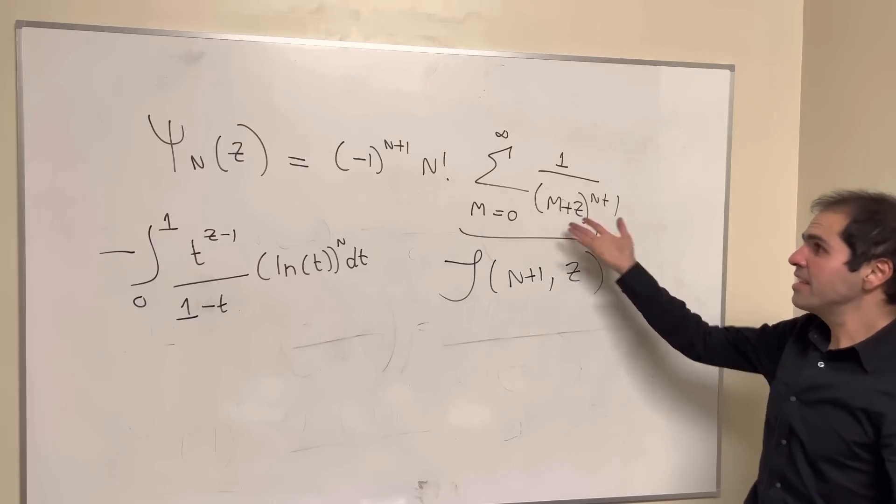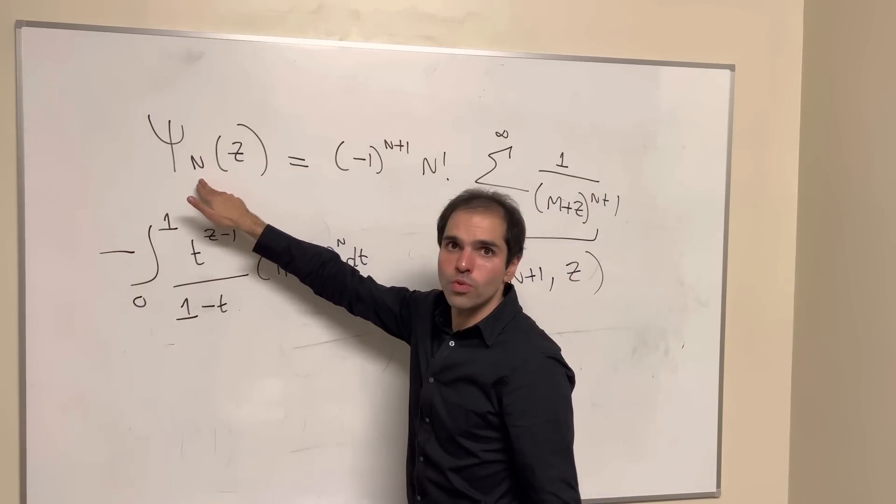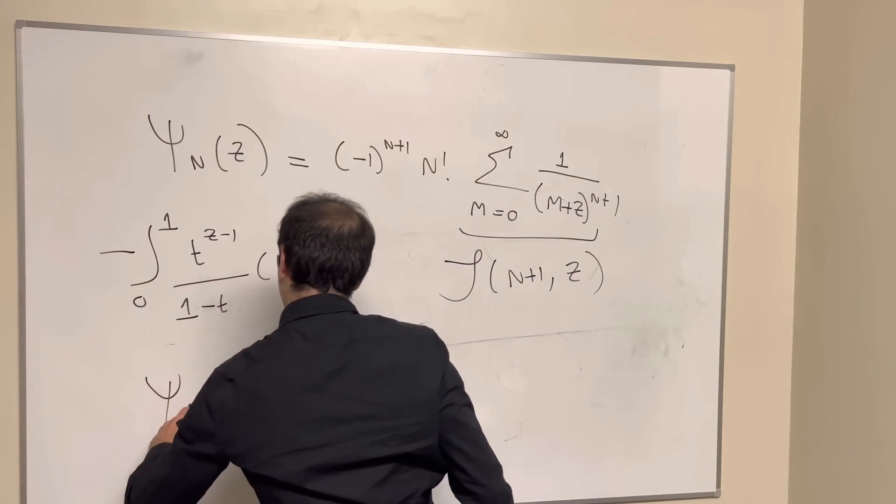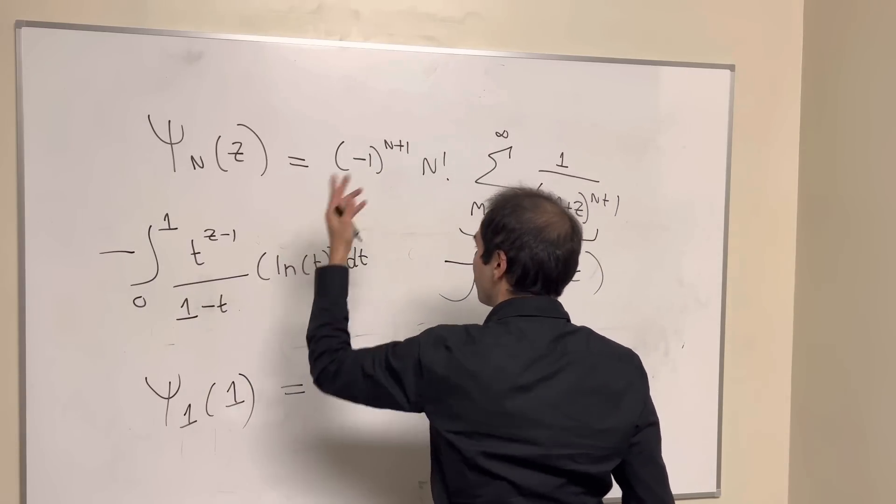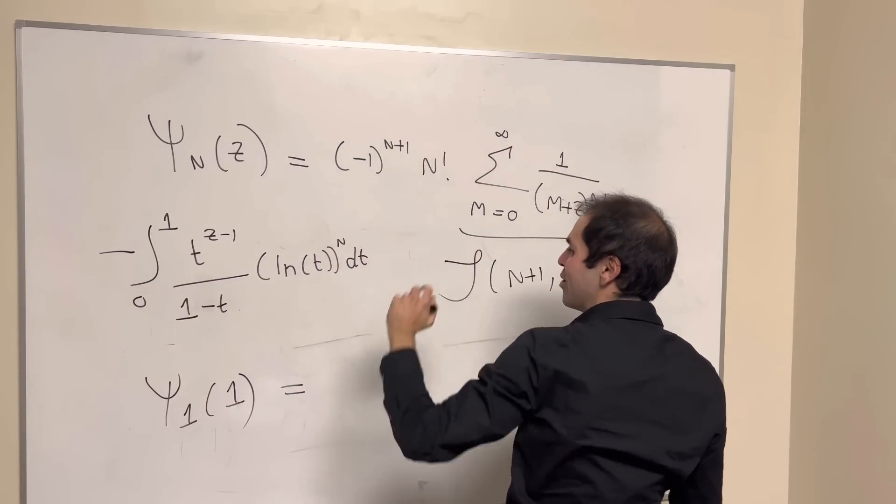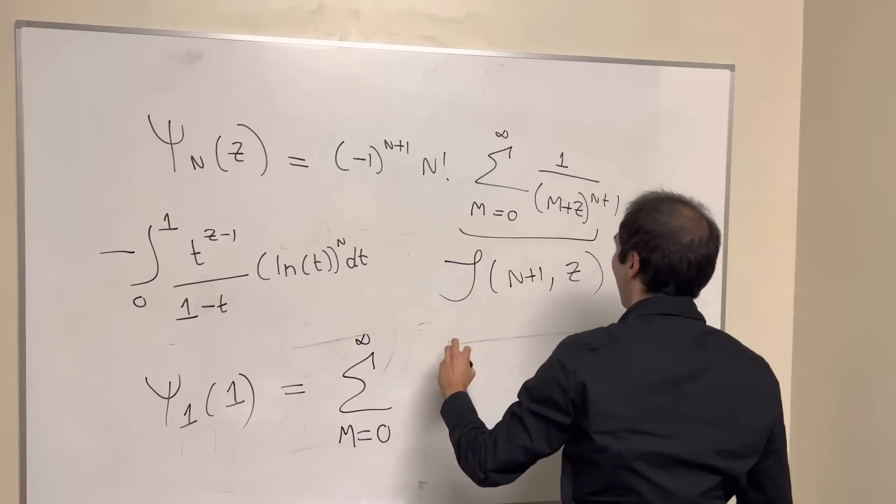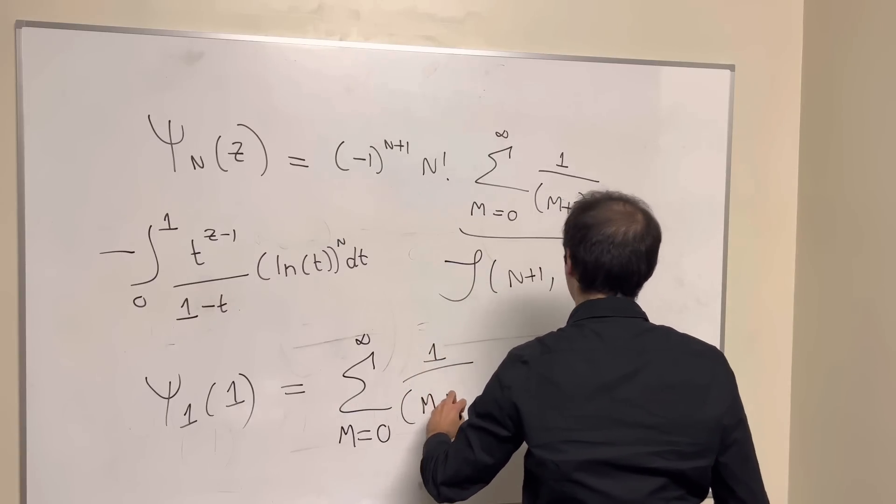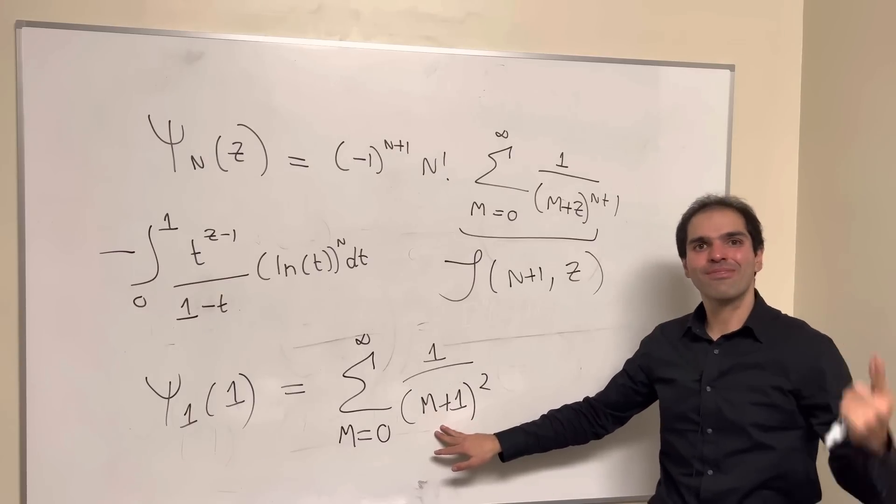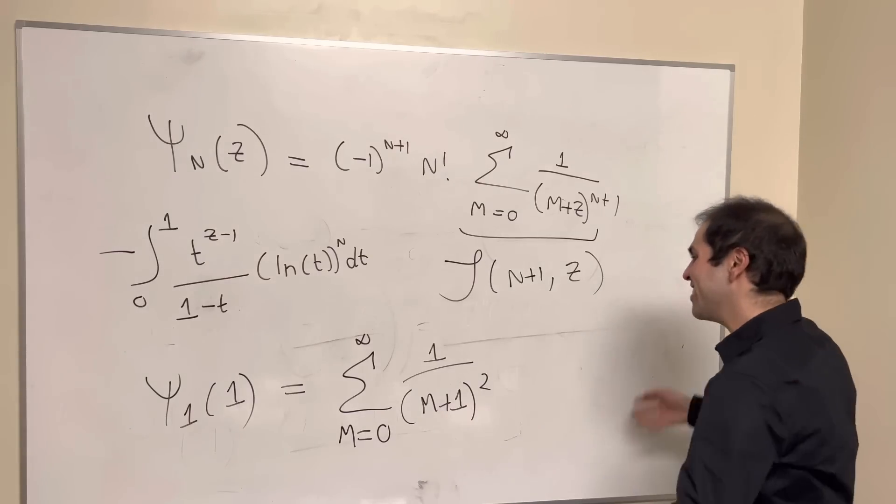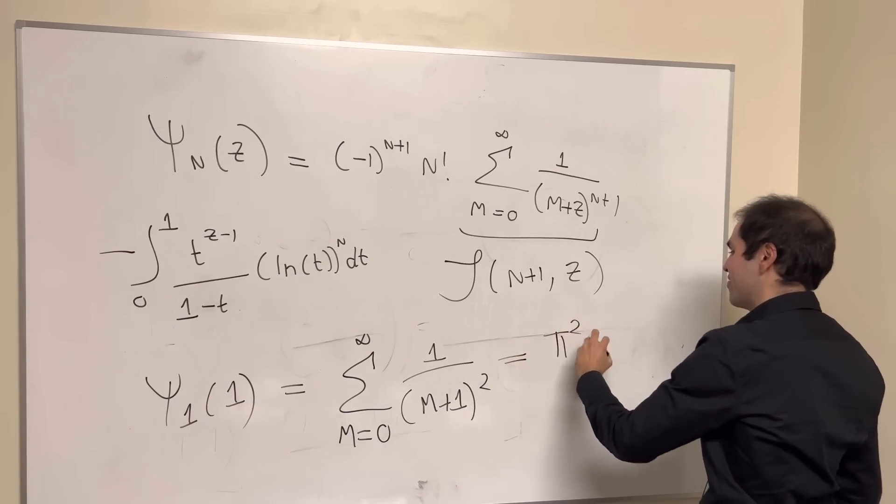But the nice thing is this formula is enough to conclude, because again, all we want to do, we want to plug in z equals 1 and n equals 1. So psi 1 of 1, that becomes minus 1 squared, so 1 and 1 factorial, which is 1. And the sum from m from 0 to infinity of 1 over m plus 1 squared. But look, what is this? It's 1 over 1 squared plus 1 over 2 squared plus 1 over 3 squared. So the zeta 2 series, and then you just get pi squared over 6.